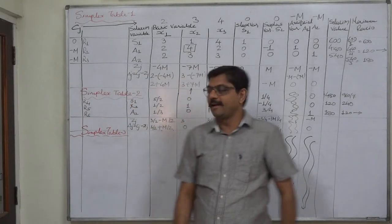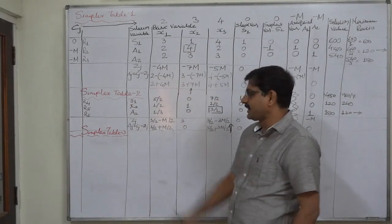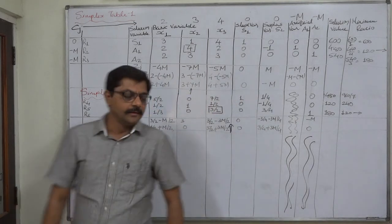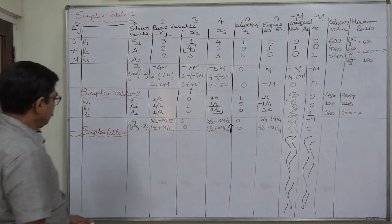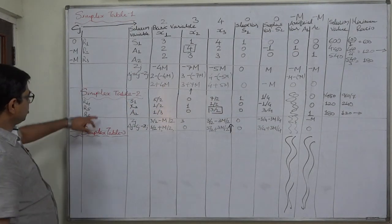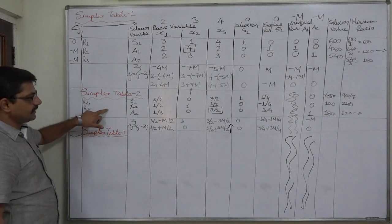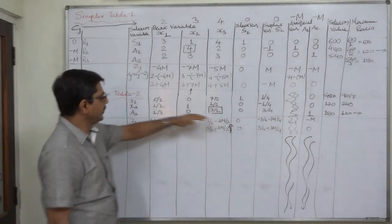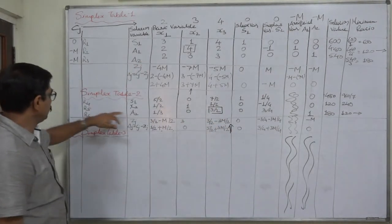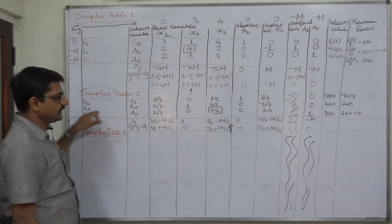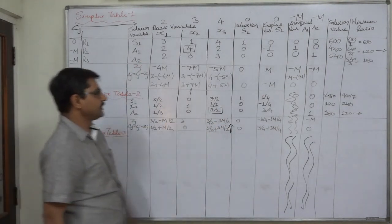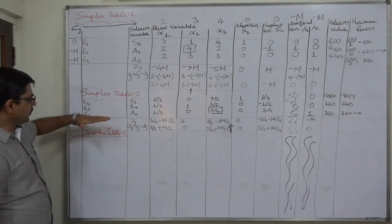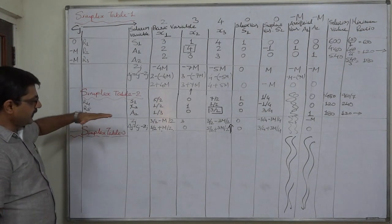Hello and welcome. Now let us prepare Simplex Table 3. In the second simplex table, the key column is x3, the key row is A2 (r6), and the key limit is 3/2. So the third row of the second table is the key row.